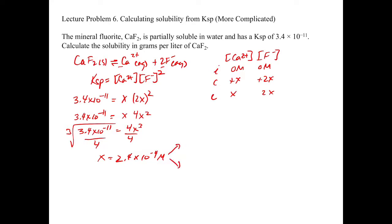So X equals the concentration of calcium 2+, which is 2.4 times 10 to the minus 4 molar. For the concentration of fluoride, we have to multiply by 2 because of the 2X term, so the concentration of F⁻ equals 4.8 times 10 to the minus 4 molar. You have to make sure you do this correctly, accounting for 1 calcium 2+ and 2 fluorides.